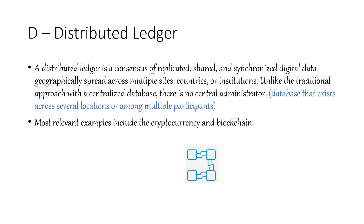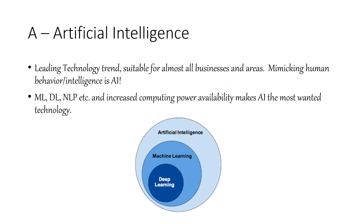D is Distributed Ledger Technology, and that's nothing but replicated, shared, synchronized digital data which is geographically spread across multiple sites, countries, institutions, or persons. It's not like the traditional centralized storage approach — there is no central administrator. It's totally decentralized and can span several locations and multiple participants. Cryptocurrency and blockchain are the best examples of distributed ledger technology.